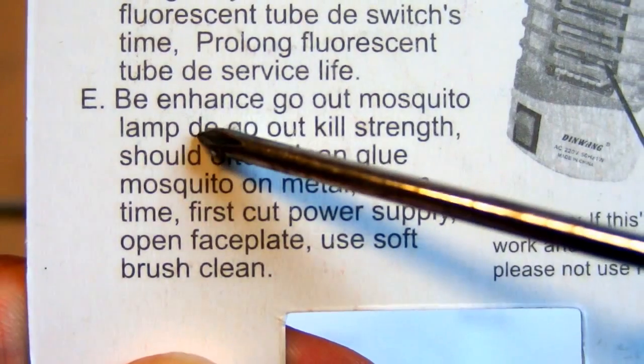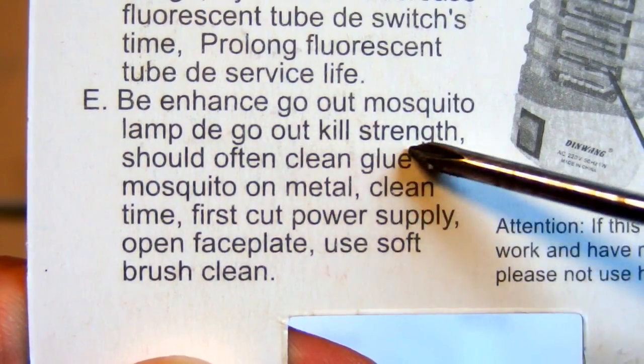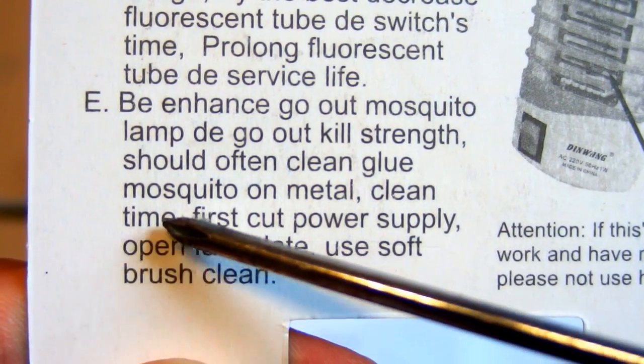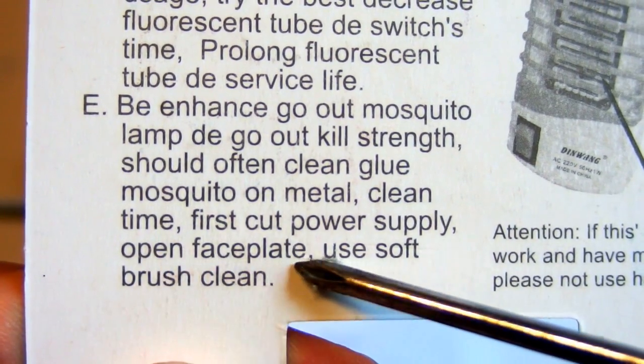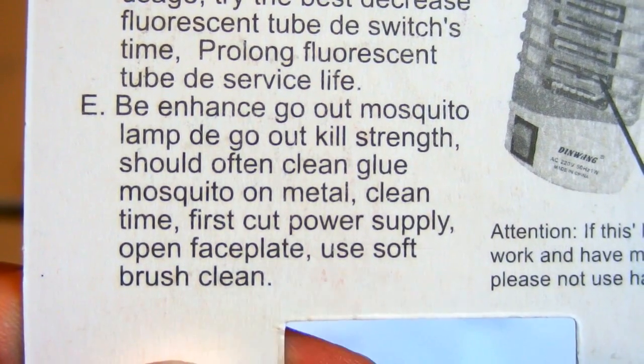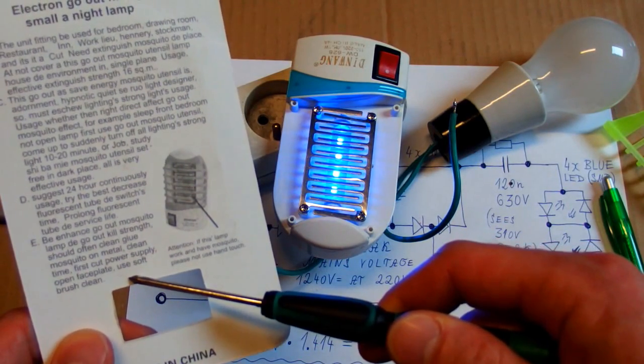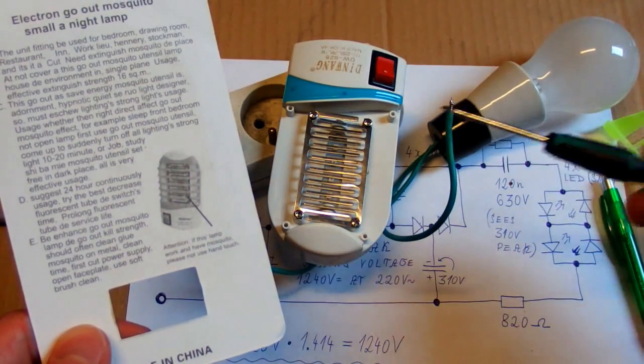Be enhanced, go out mosquito lamp, the go out kill strand, should often clean, glue mosquito on metal, clean time, first cut power supply, open face plate, use soft brush clean. They are apparently trying to say that you should cut the power before you clean it, but they don't say anything about the capacitors holding the charge.